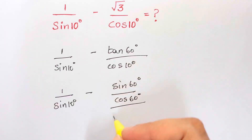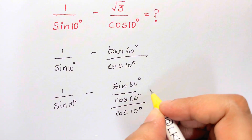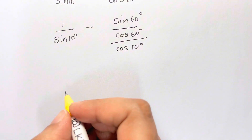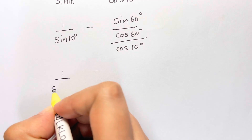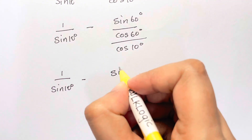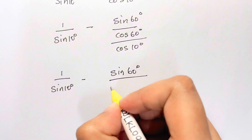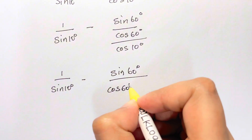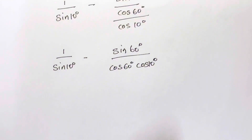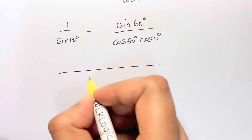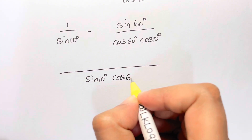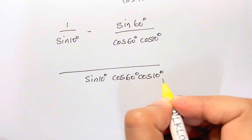We have 1 over sin(10°), and here sin(60°) over cos(60°) times cos(10°). Now let's take the LCM, so what do we have: sin(10°), cos(60°), and cos(10°).